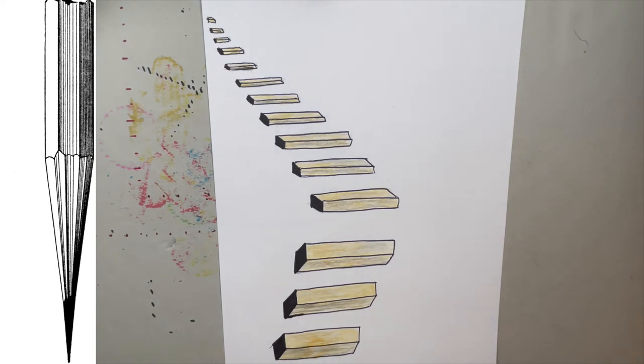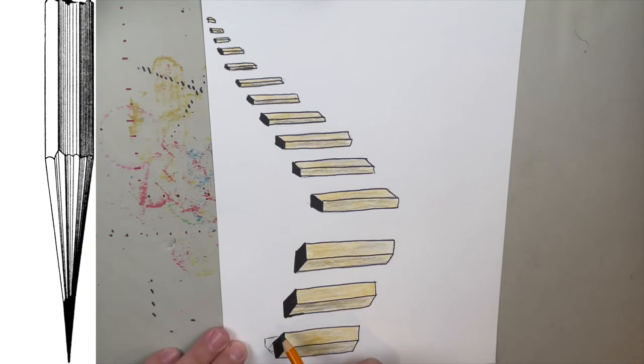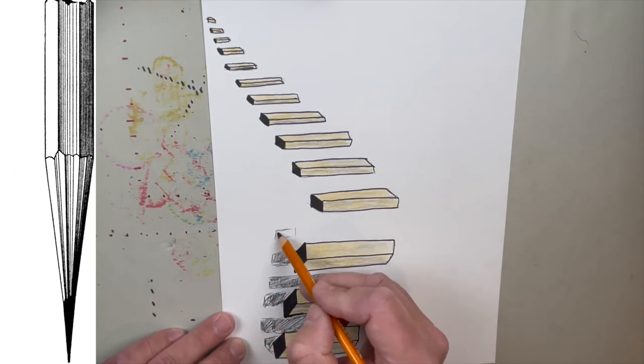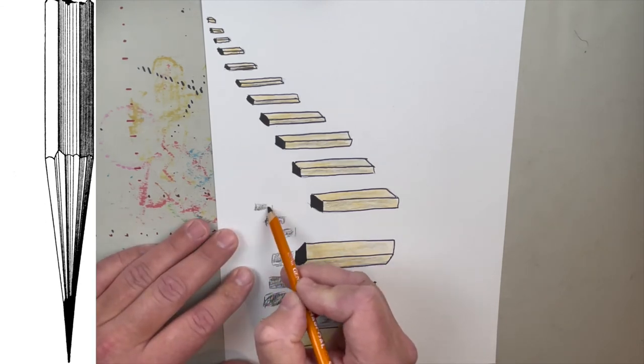Alright, once we're done with that, now we're going to create some shadows underneath the stairs. Obviously every single staircase has some shadows, and I think this is really what's going to make the stairs pop off the paper. So on the lower ones, you're going to basically create rectangles, kind of the same shape as the stairs themselves. And you're going to use a charcoal pencil.